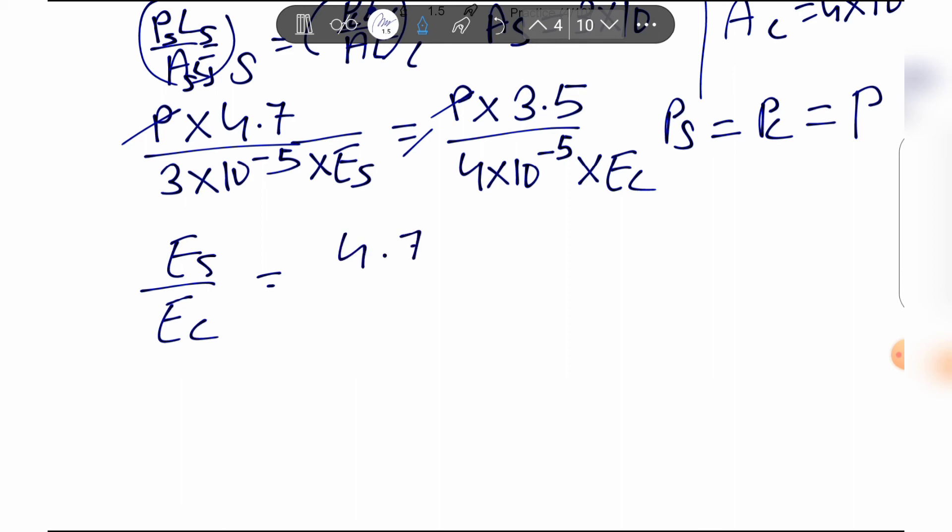Es by Ec equals 4.7 into 4×10^-5 divided by 3.5 into 3×10^-5. The 10^-5 terms cancel.